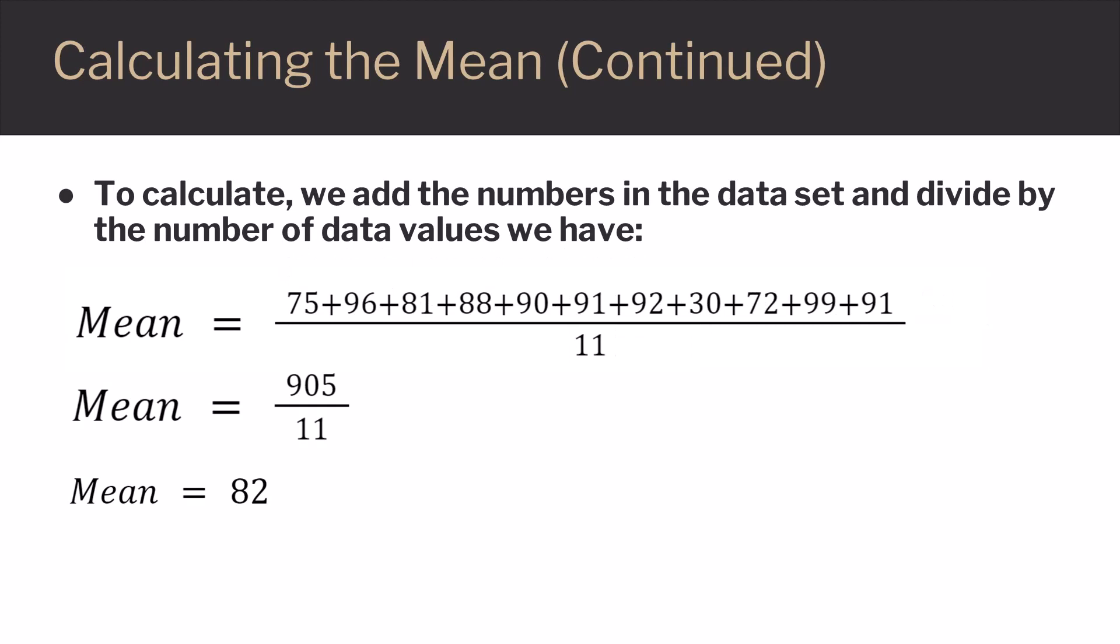In this case, you notice that we add up all the items. That's across the top. And we're going to divide by 11, because 11 is the number of data values. When we add up, we get 905 over 11. And when we do that calculation, we find that the mean is 82.